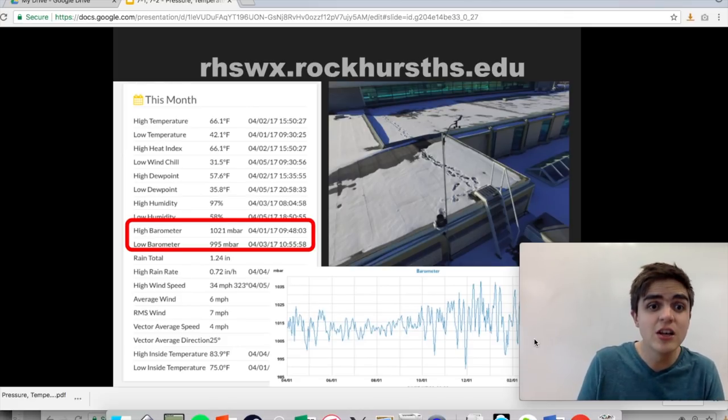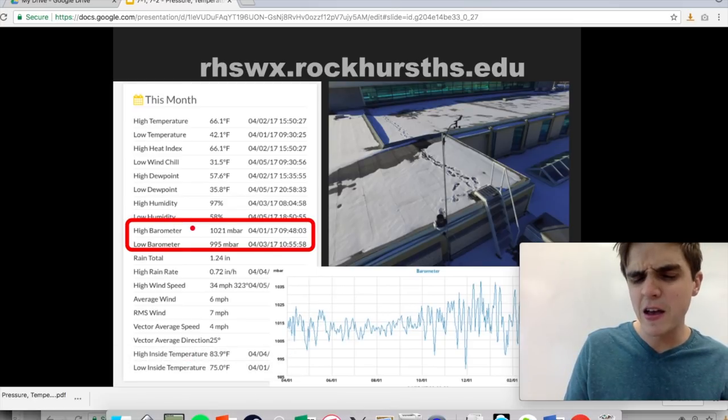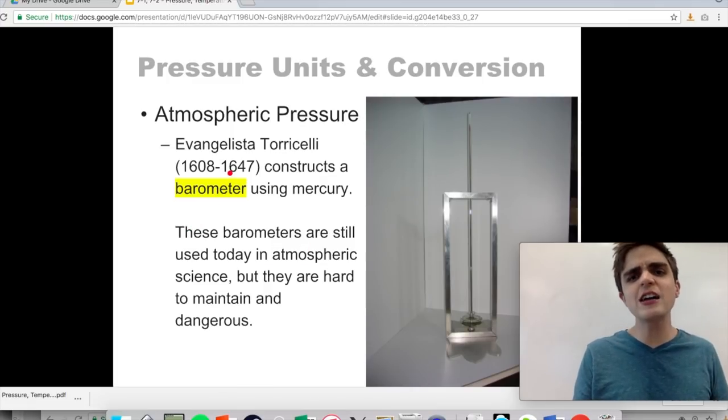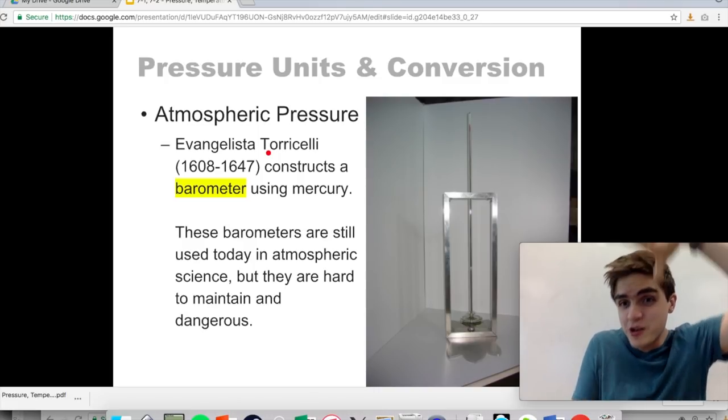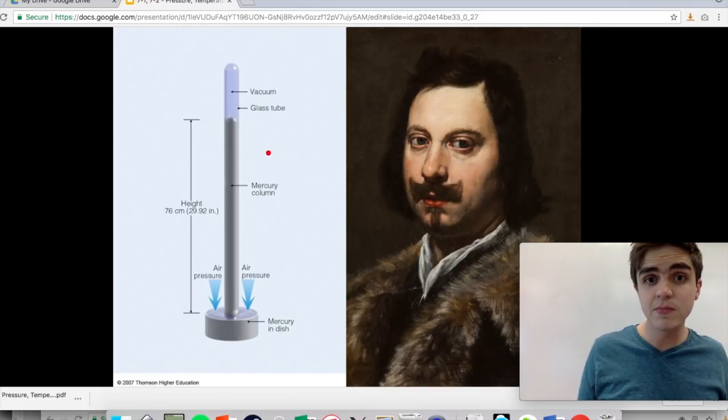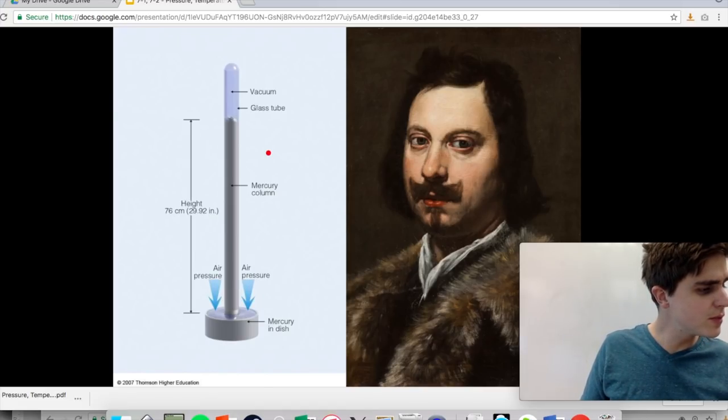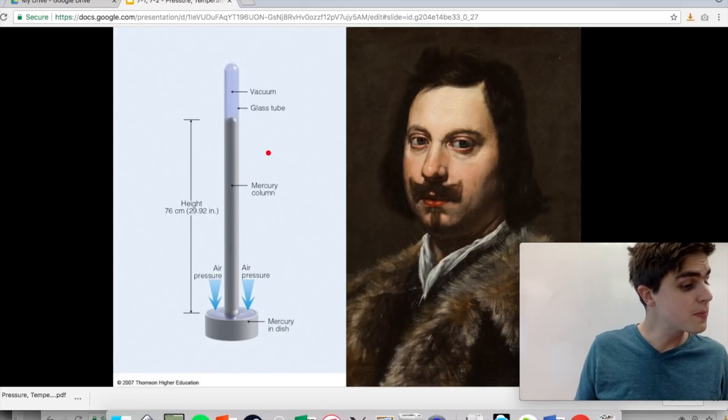I want to point out, if nothing else, that you need to know what the instrument that measures this is. And that's called the barometer. Barometer, B-A-R-O meter, M-E-T-E-R. The barometer is what measures pressure. And the first guy to make a barometer, at least one that worked, was this guy, Evangelista Torricelli. He's an Italian. He lives well before the United States is founded. And that barometer was made using mercury. And I want to point out, his design was actually really good.